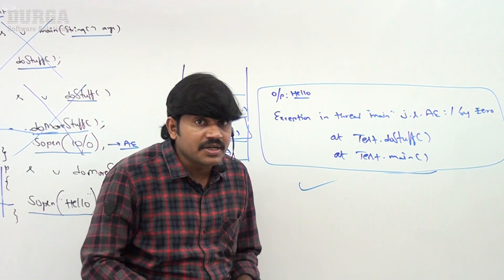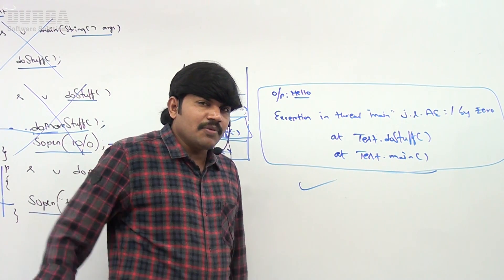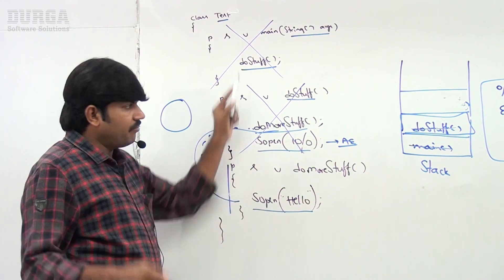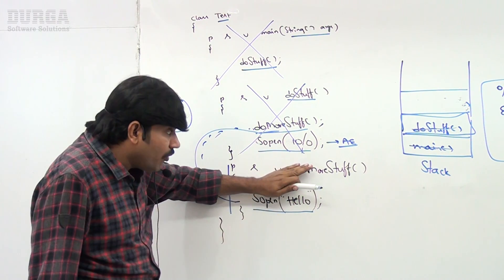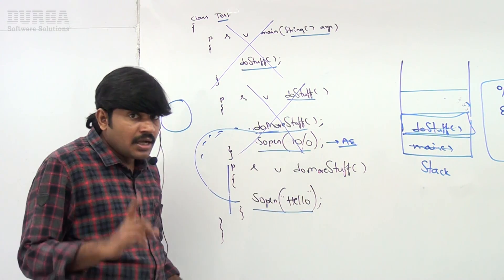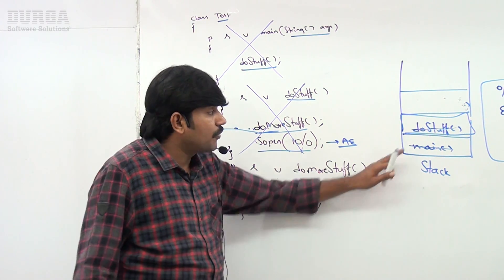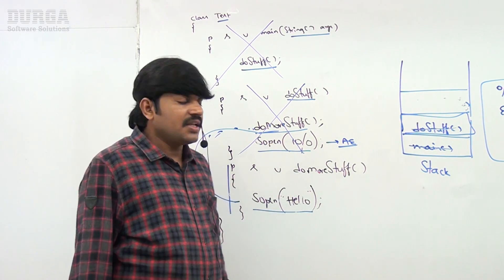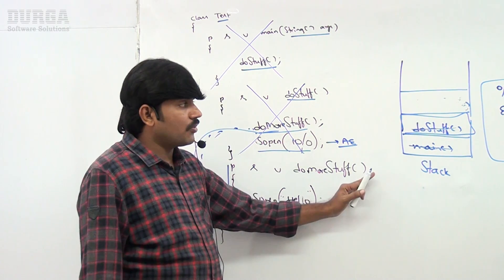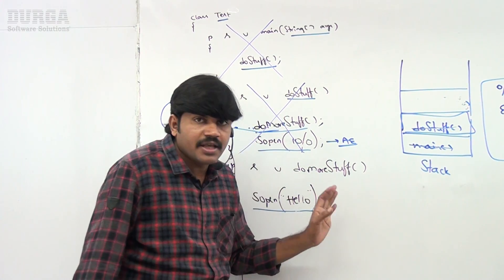To summarize: there are three methods — main, doStuff, and doMoreStuff. doMoreStuff has normal termination, but the remaining two methods have abnormal termination. Remember: if at least one method terminates abnormally, the program termination is always abnormal — even though doMoreStuff completed normally, the overall program has abnormal termination.